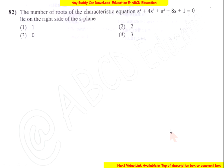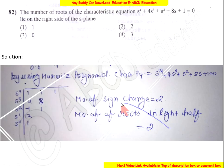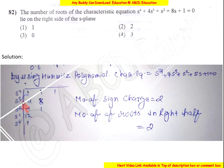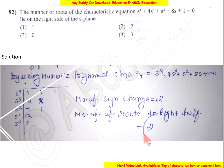Now question number 82. Find the number of roots of the given characteristic equation that lie on the right side of the S-plane. We apply the Routh-Hurwitz method. After constructing the Routh array with the given characteristic equation values, the number of sign changes in the first column equals 2. The number of sign changes equals the number of right-half-plane poles, which is 2. So the answer is 2.